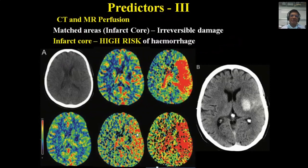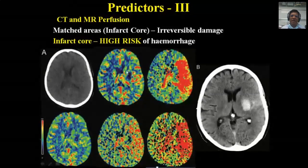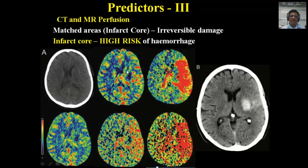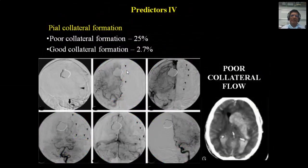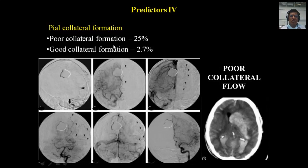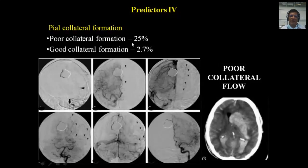The third predictor is based on CT and MR perfusion. In the matched area of infarction — the infarct core with irreversible brain damage — chances of hemorrhage are quite high. If the location is beyond the infarct core, chances of hemorrhage are lesser. The fourth predictor is based on angiography. If there is good collateral formation on DSA done before thrombolysis, chances of hemorrhage are 2.7% or less. With poor collateral formation, the chances are 25% or more.